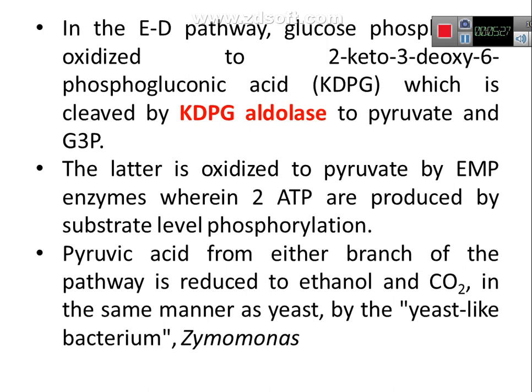In the ED pathway, glucose-6-phosphate is oxidized to 2-keto-3-deoxy-6-phosphogluconic acid, KDPG, which is then cleaved to pyruvate and glyceraldehyde-3-phosphate. When glyceraldehyde-3-phosphate enters the EMP pathway and is metabolized, you get 2 ATP by substrate-level phosphorylation, but since 1 ATP is consumed, the net gain is only 1 ATP. The pyruvic acid is reduced to ethanol and carbon dioxide, as seen in anaerobic fermentation in yeast. This ED pathway particularly occurs in the yeast-like bacterium Zymomonas.